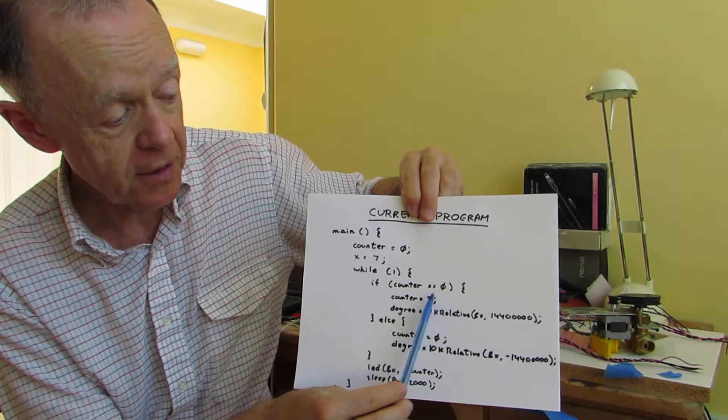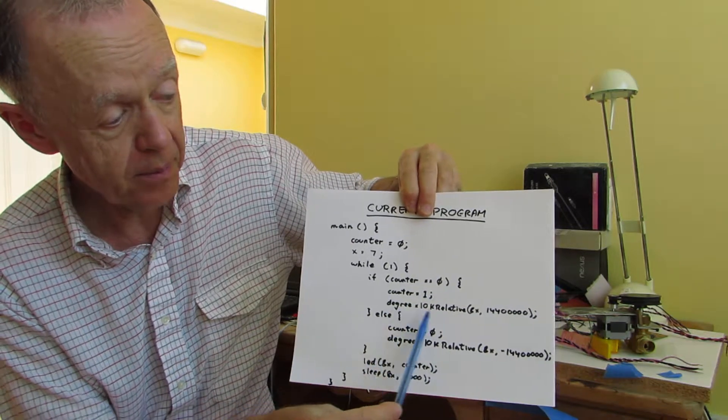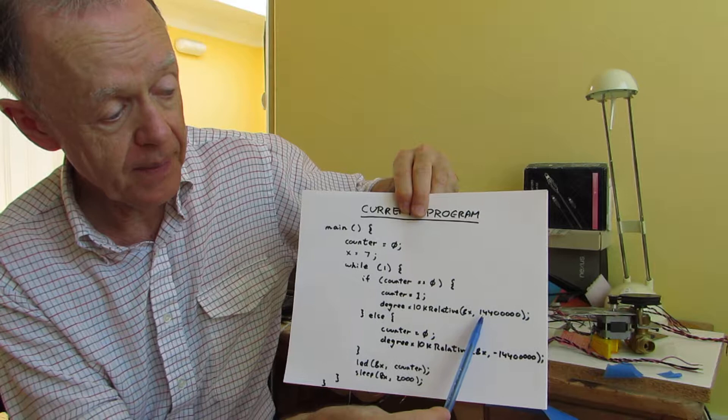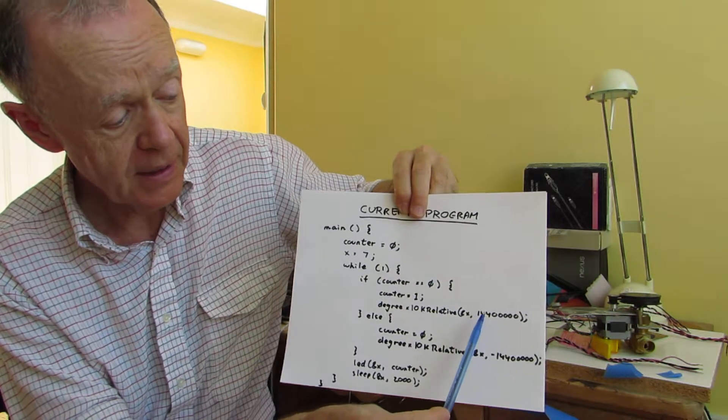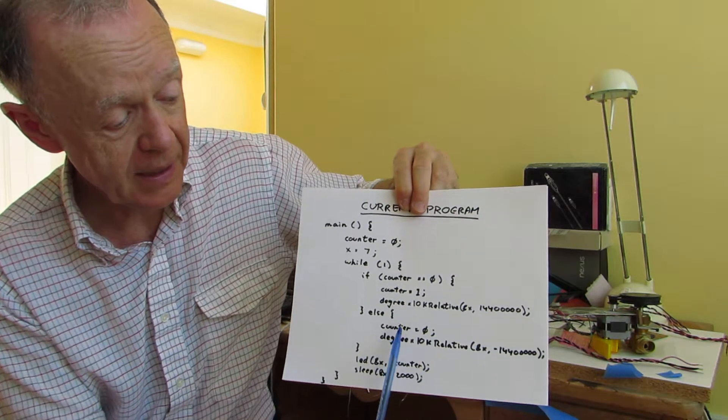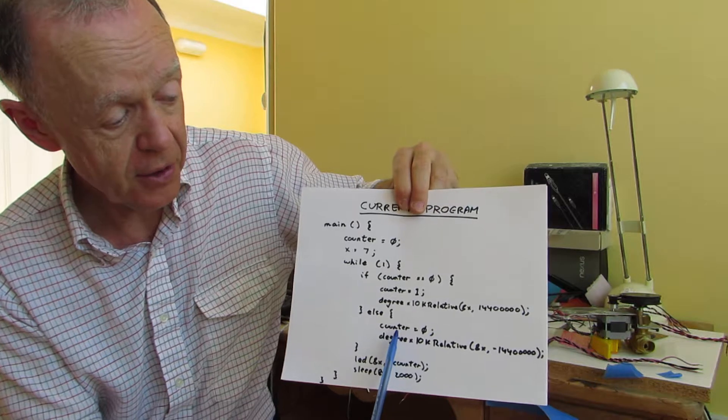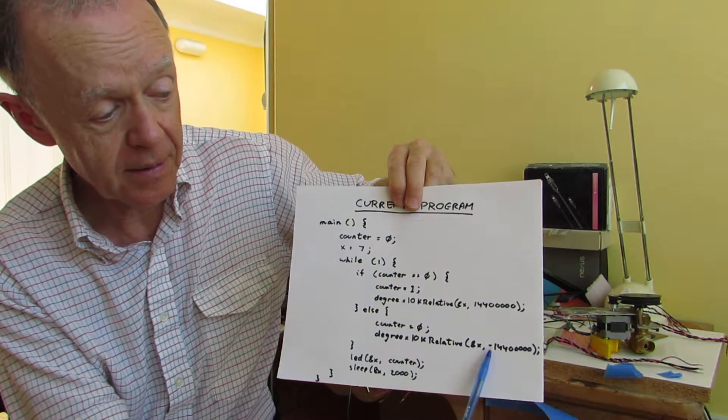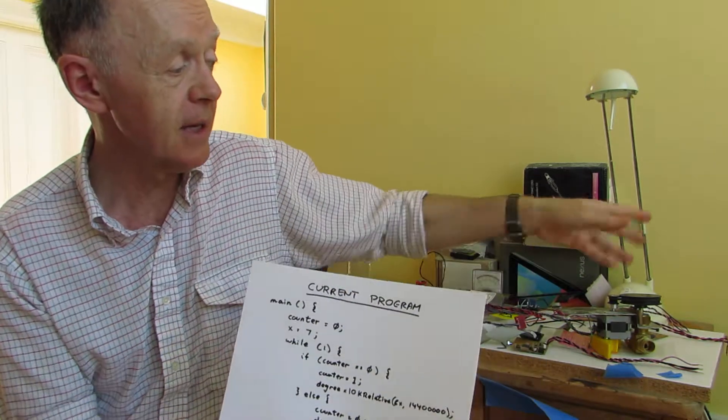If the counter is zero, then we move it by 144 degrees in one direction, and if the counter is not zero, we move it back the other way. So it's just oscillating back and forth.